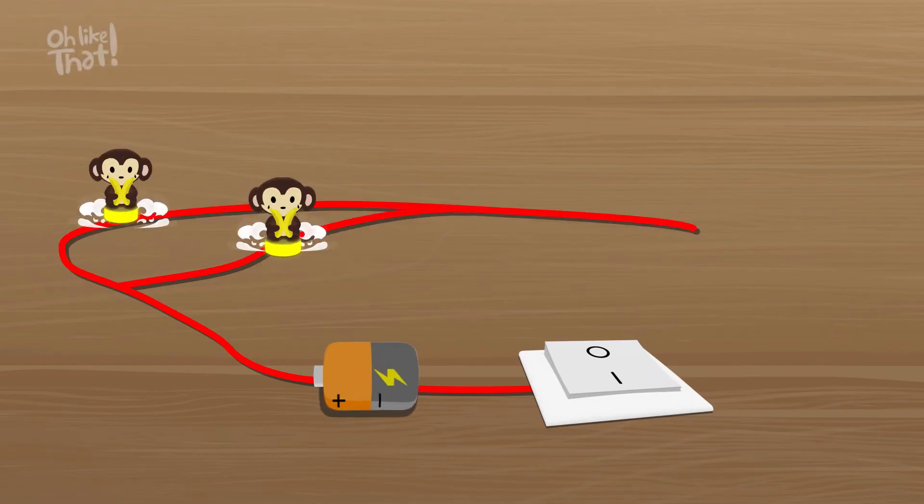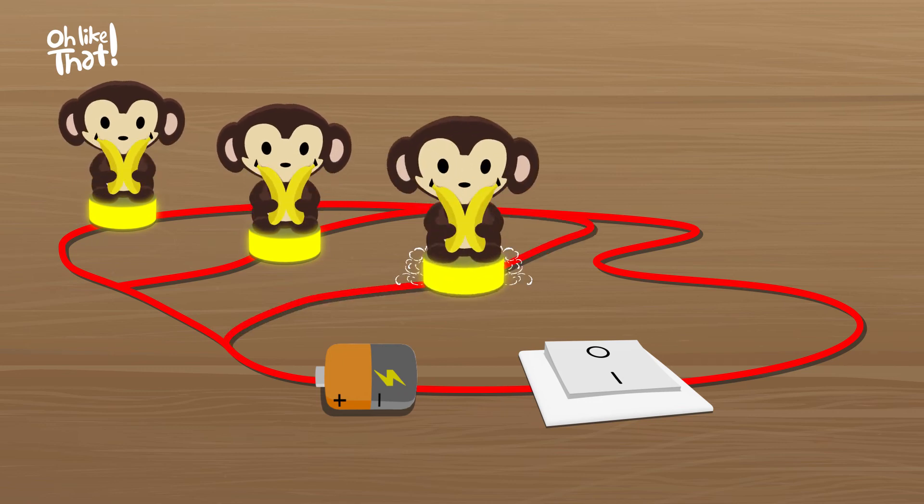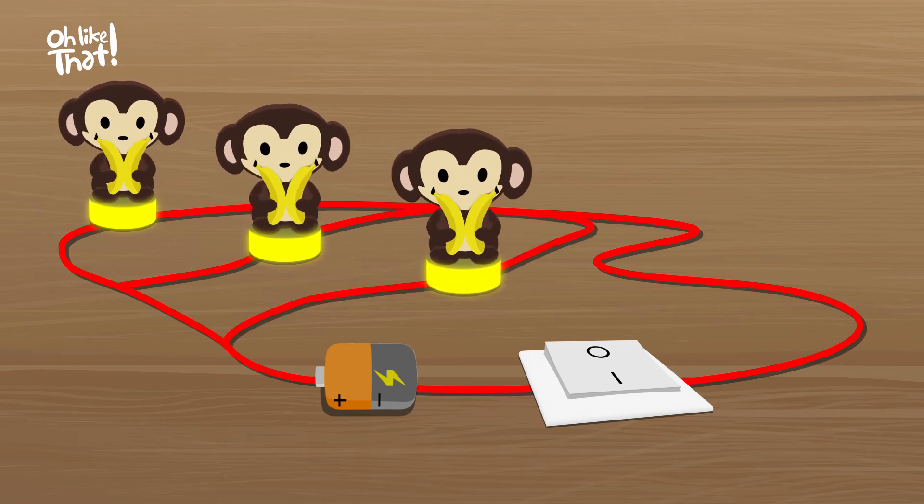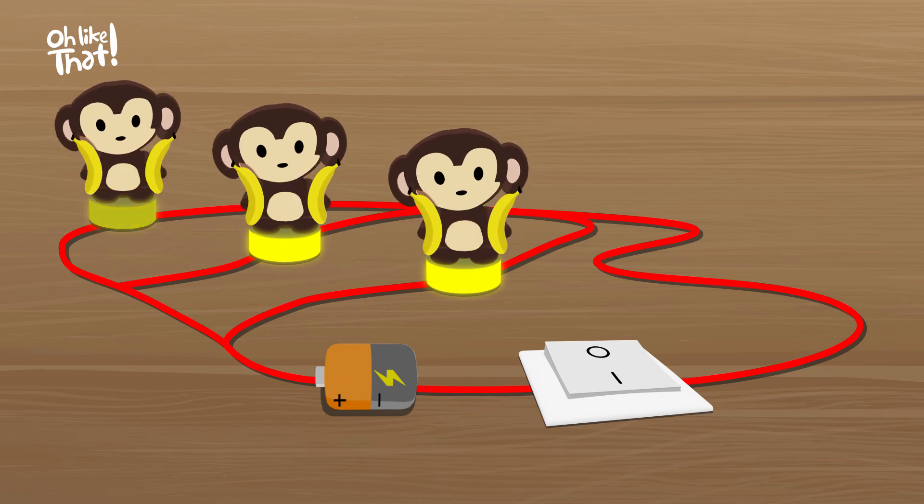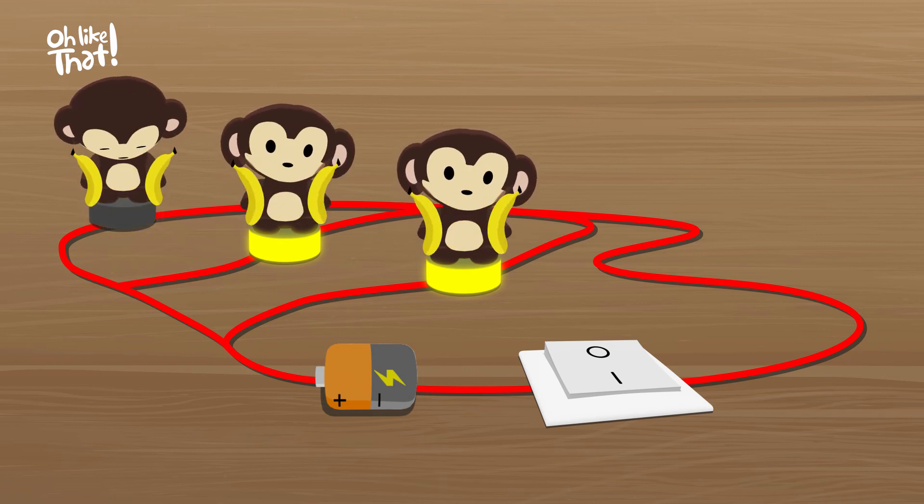On the other hand, in the parallel circuit, even when you add more bulbs to the circuit, the brightness remains consistent. Also, when one bulb fails to function, it's easier to pinpoint exactly where the fault lies and correct it.